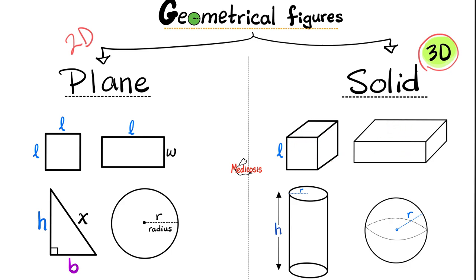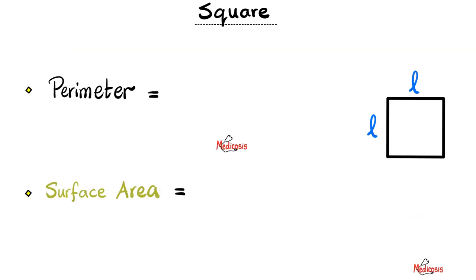Notice that the cube is made of a bunch of squares, but the cuboid is made of rectangles. The cube has six surfaces. The cuboid has six surfaces as well. This is a sphere, and this is a cylinder.